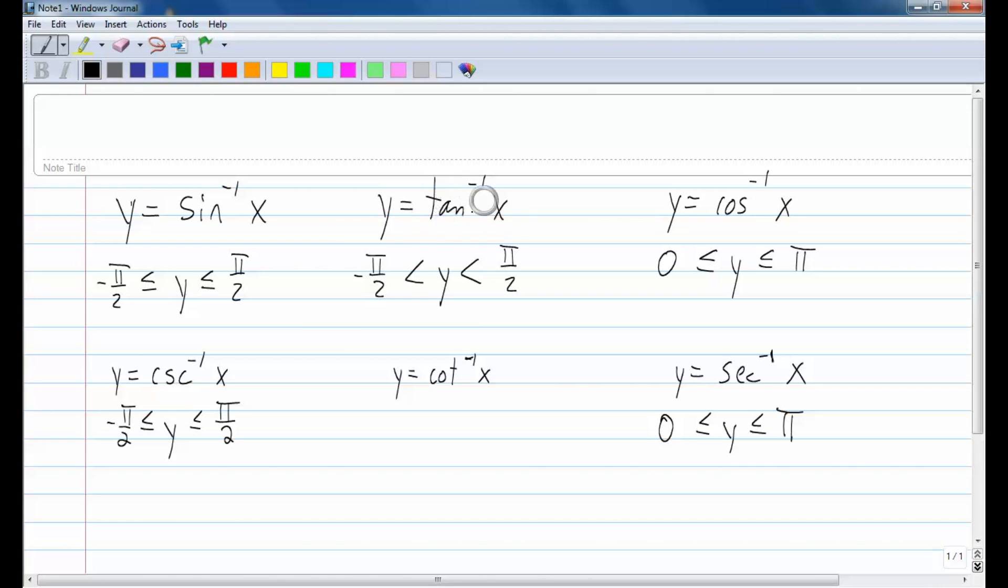Notice that tangent is closely related to sine, or inverse tangent is closely related to inverse sine, and tangent is sine over cosine, so it's kind of defined like its numerator. Inverse cotangent follows that same lead in the respect that cotangent is cosine over sine, it's defined like its numerator cosine or inverse cosine.